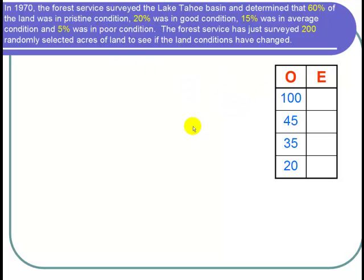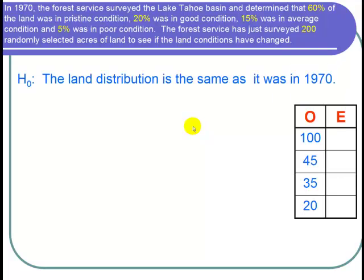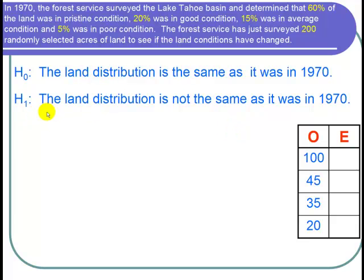Let's state our null and alternative hypotheses. The null hypothesis is: the land distribution is the same as it was in 1970. The alternative hypothesis is: the land distribution is not the same as it was in 1970.